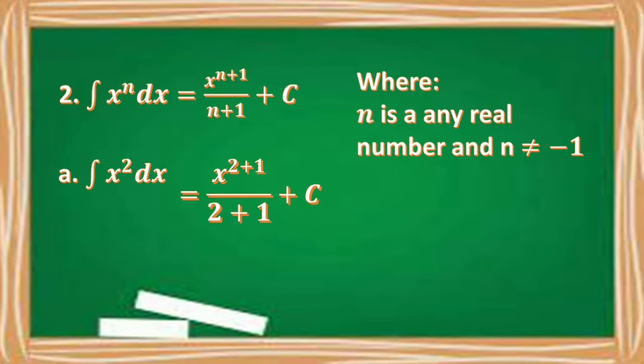Using the power rule, we get x raised to 2 plus 1 over 2 plus 1 plus C, which is equal to x cubed over 3 plus C.